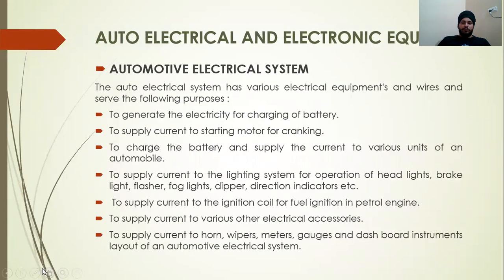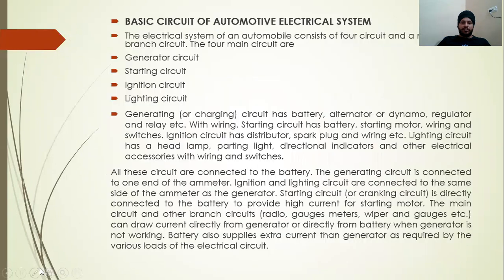What is an automotive electrical system? The automotive electrical system is mainly divided into four circuits. The first circuit is the generator circuit, also known as the charging circuit. In the charging circuit, equipment like the alternator or dynamo, regulator, and relay help in charging the battery. The second circuit is the starting circuit, which includes equipment like the starting motor, wiring, battery, and switches.